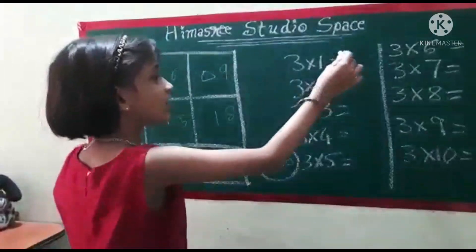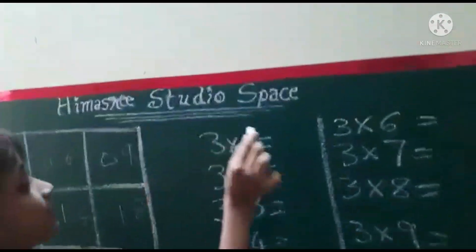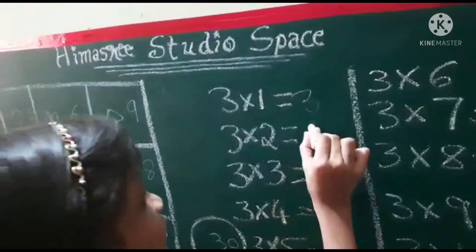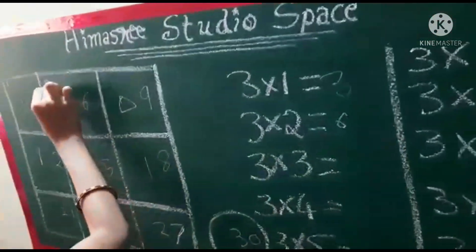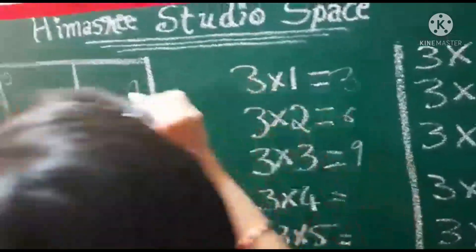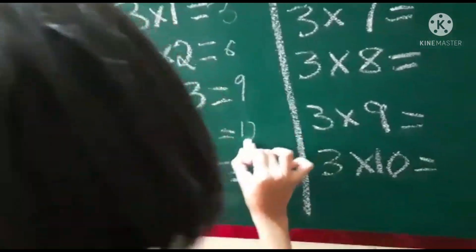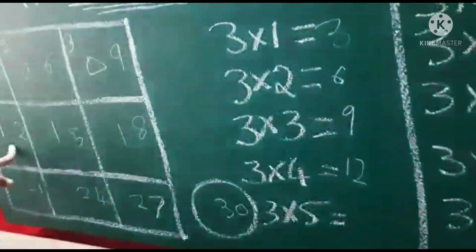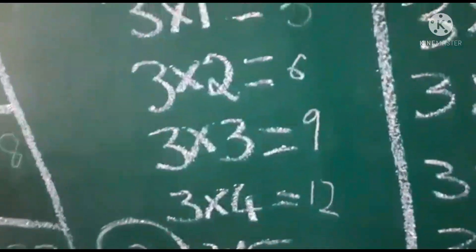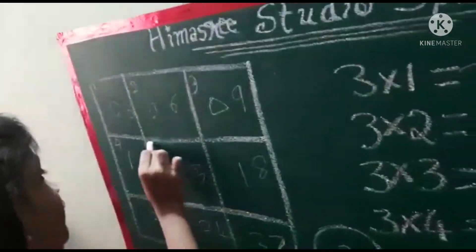Let's see it all. 3 ones are 3. 3 twos are 6. 3 threes are 9. 3 fours are 12. 3 fives are 15.